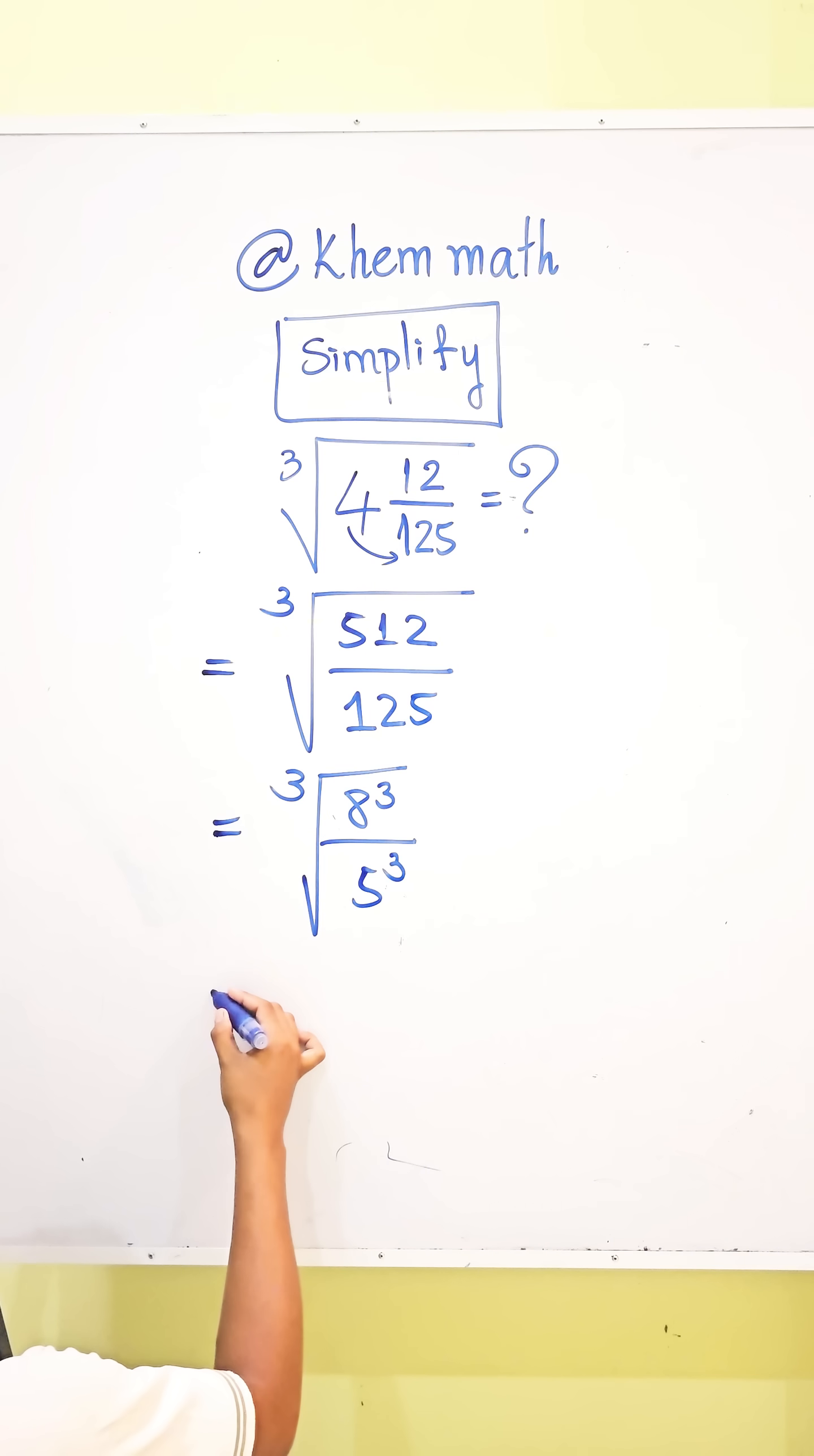Now we can write it as cube root of 8 divided by 5, all cubed.